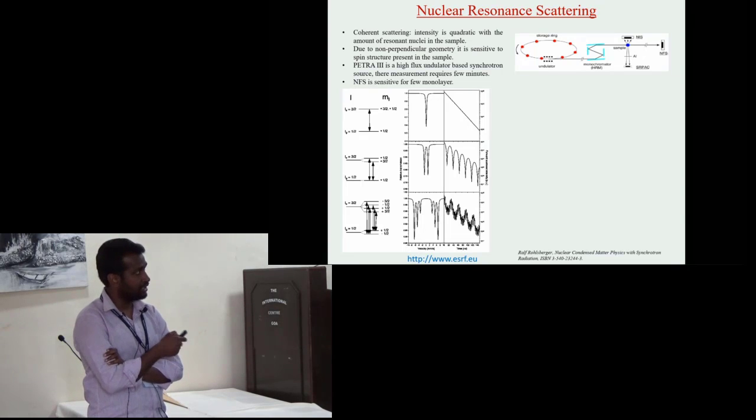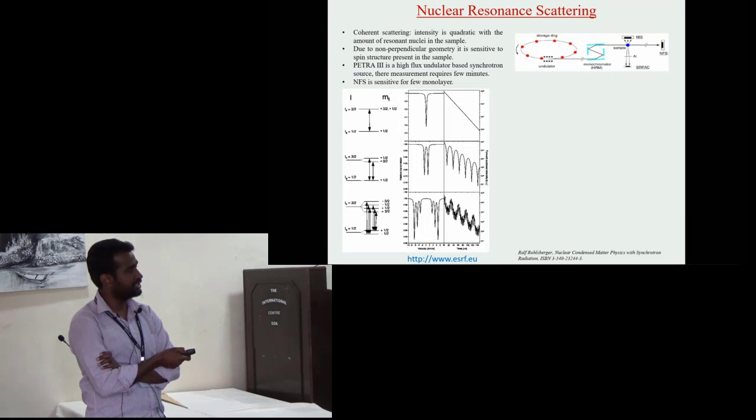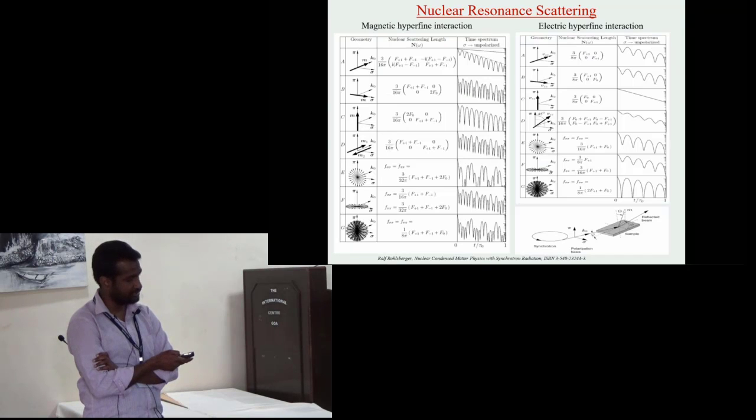This technique is based on Mössbauer spectroscopy. Depending on the sample, in case of non-magnetic we will get spectrum like this and in case of magnetic we will get spectrum like this.